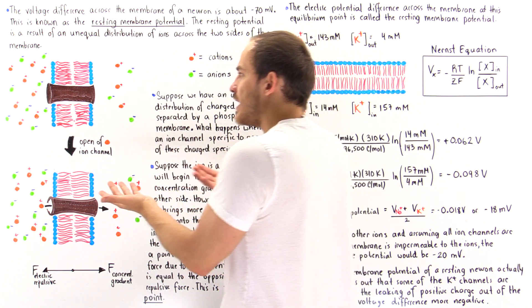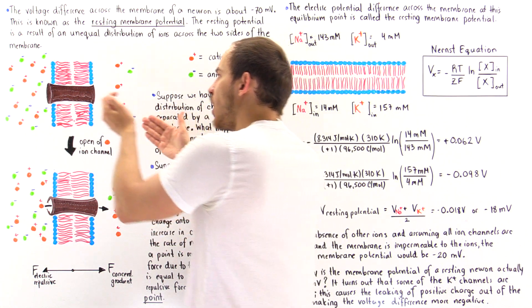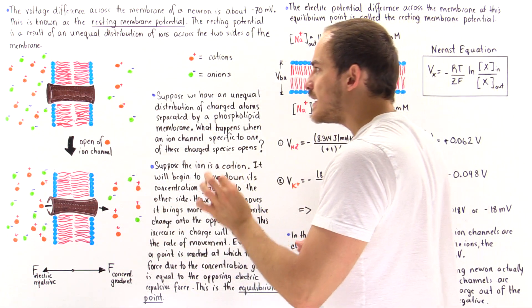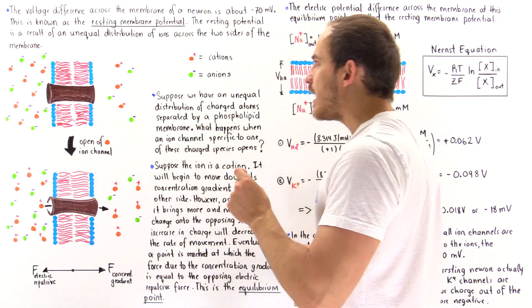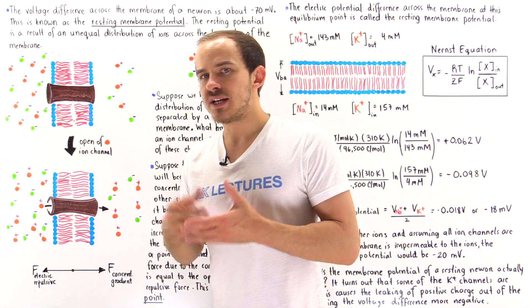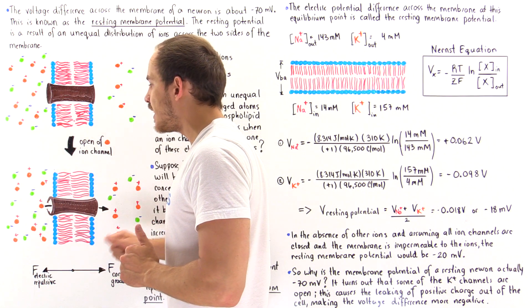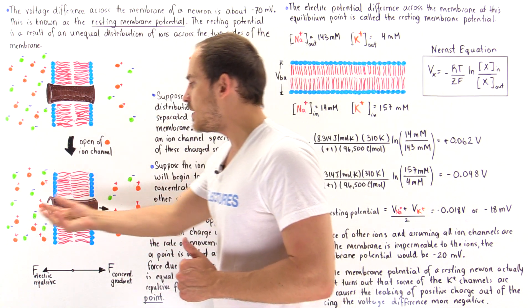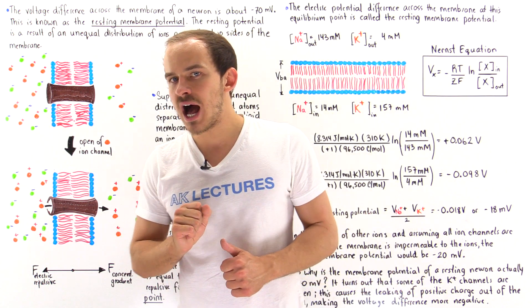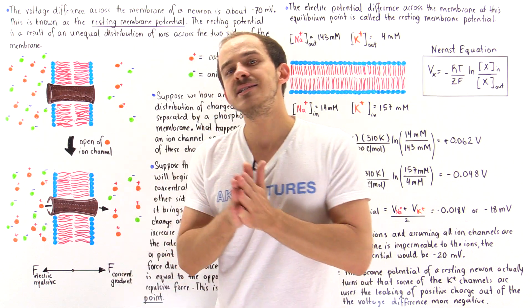If we somehow create a pathway, these ions will want to move spontaneously across. So when we open up this channel, let's suppose the channel is a specific ion channel that only allows the movement of cations — it doesn't allow the movement of anions. As we open it up, because of this concentration difference between the two sides, these positively charged ions will begin to move spontaneously from the high-concentration side to the low-concentration side. But over time, the rate of movement begins to decrease until it equals zero.